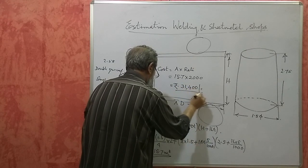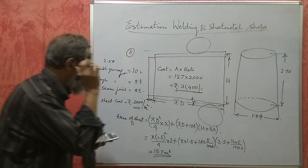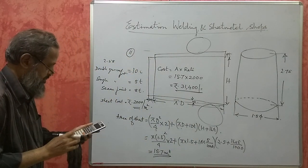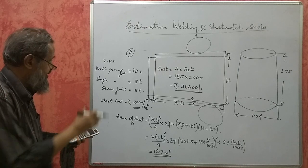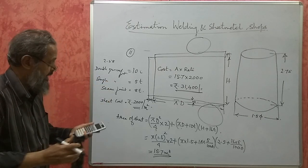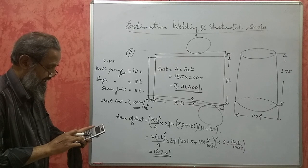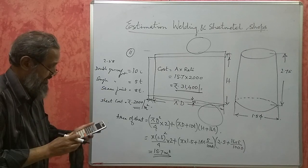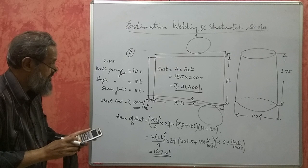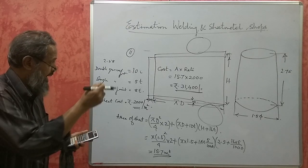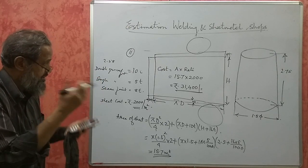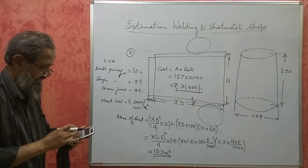The rate is rupees 2000 per square meter, so the cost = 15.7 × 2000 = rupees 31,400. That is the cost of the sheet required to fabricate the drum. I think we have understood it — please like, comment, share, and subscribe, and you can also call and ask any doubts. Thank you.